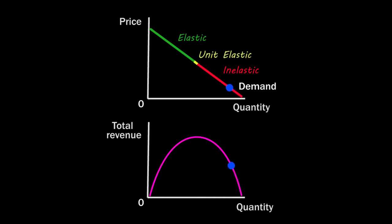In the inelastic range of the demand curve, a price increase raises total revenue because the decrease in quantity is small relative to the increase in price. In the unit elastic range of a demand curve, a price increase has no effect on total revenue because a price increase is matched by a quantity decrease of the same proportion.